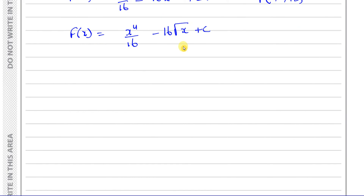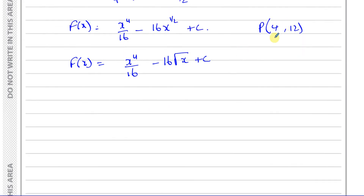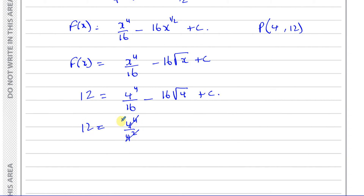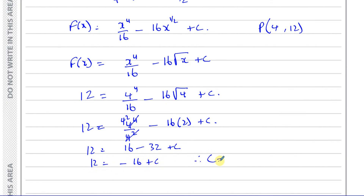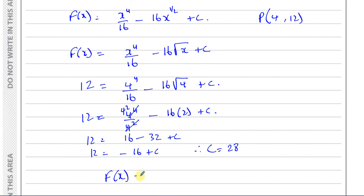Substituting x equals 4 and f(x) equals 12: 12 equals 4 to the power of 4 over 16, minus 16 times the square root of 4, plus c. Now 4 to the power of 4 is 256 and 256 over 16 equals 16. So 12 equals 16 minus 16 times 2 plus c, giving 12 equals 16 minus 32 plus c, so 12 equals negative 16 plus c, therefore c equals 28.